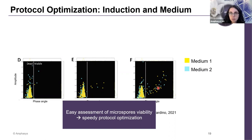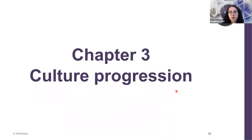This scatter plot of condition F is a good transition to the next chapter of my presentation, where I will show you how you can obtain a glimpse of the progress of the culture with the AMPAS Z32 and even be able to assess the embryo yield very early on.